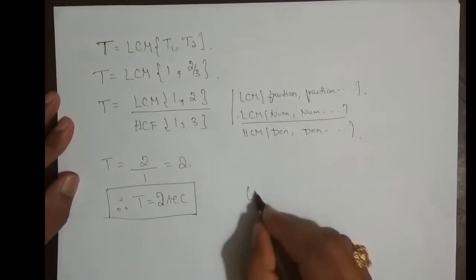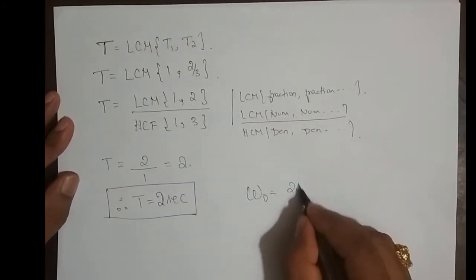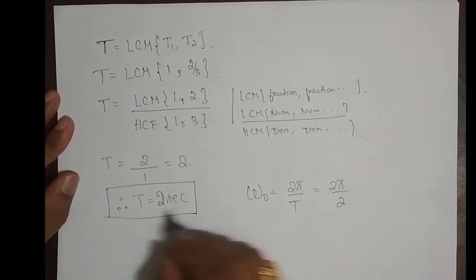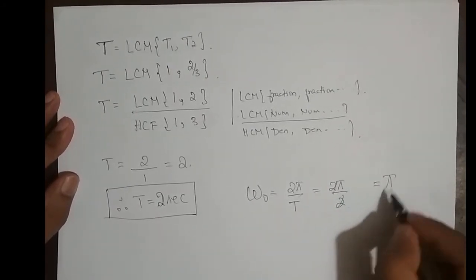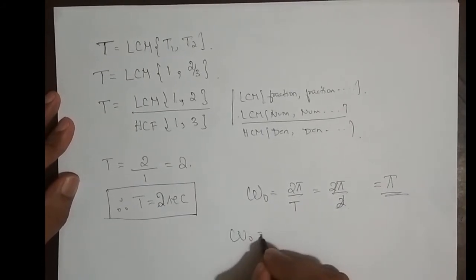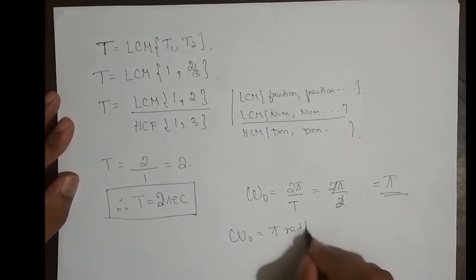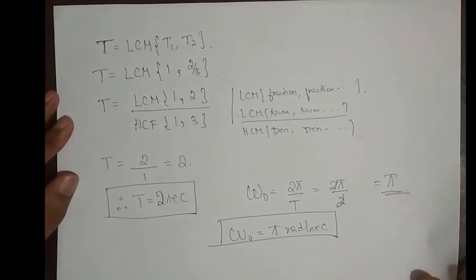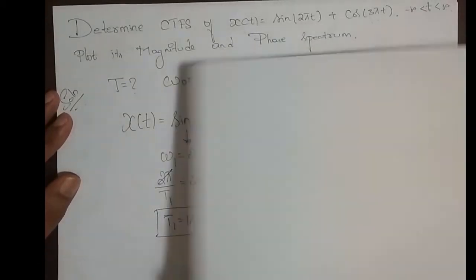The fundamental period of the combined signal is T = 2 seconds. Therefore ω₀ = 2π/T = 2π/2 = π radians per second. Now that we have ω₀, we expand the signal in terms of complex exponentials.